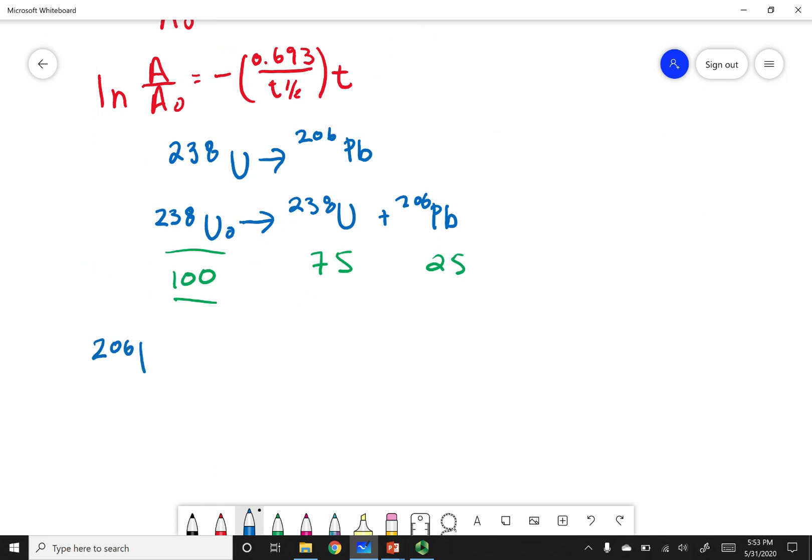I have a ratio of Lead-206 to 238U that your problem gave you, and it said it's 0.115. Now this is just a percentage in decimal form, so what I can do is turn this into a fraction. I can say that I have 11.5 Lead, and I currently have 100 Uranium. Now you can look in your book, they use 115 and 1,000. It doesn't matter what you choose as long as your ratio remains the same.